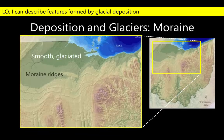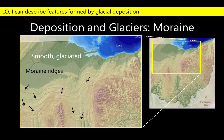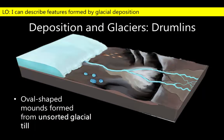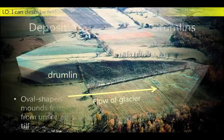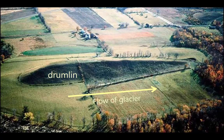Ice sheets leave behind moraines that can be traced for hundreds of kilometers across multiple states. For example, this shaded relief map of Ohio shows the positions of several moraines stretching across the northwest corner of the state and into neighboring Indiana. Piles of unsorted glacial till can also be trapped by an advancing glacier and shaped into oblong mounds known as drumlins, which narrow in the direction of glacial motion.